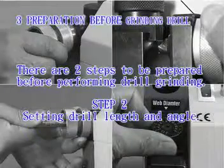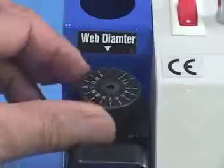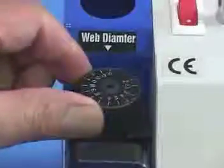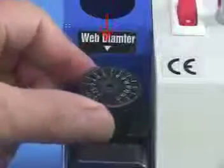Step 2: Setting drill length and angle. If the drill is 8 mm, set the regulation knob at zero by turning it clockwise to the end, then turn it counterclockwise to gradation of 8.